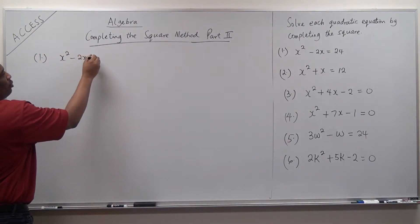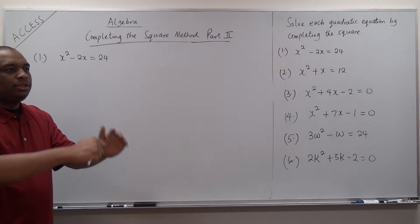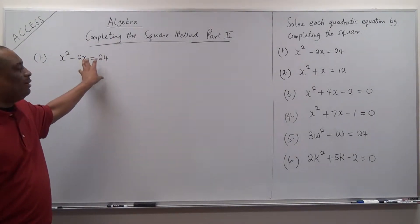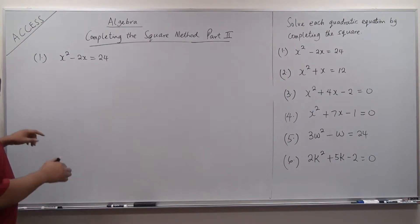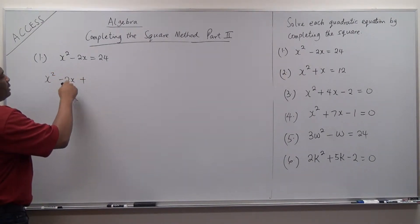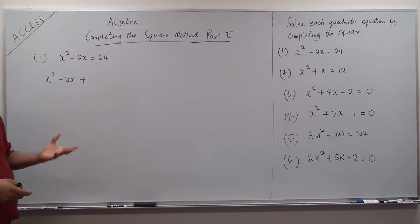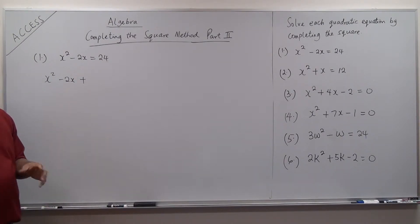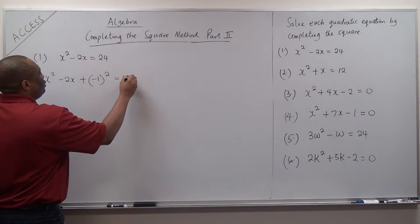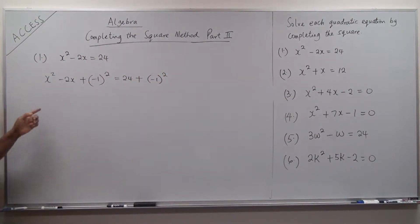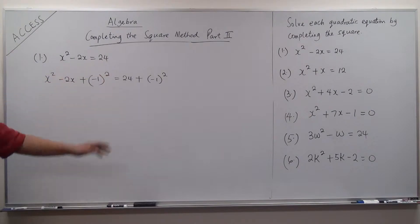x squared minus 2x equal to 24. This was something we did in the earlier part, so we just put it this way first. Then the next thing is, what do we add to both sides to make it a perfect square? That is x squared minus 2x plus the square of half of the coefficient of x. The coefficient of x is negative 2, so one half of it is negative 1. Square it: negative 1 squared. And whatever we do to the left, we have to do to the right. So we add to both sides the square of half of the coefficient of x. This was where we stopped in part 1.